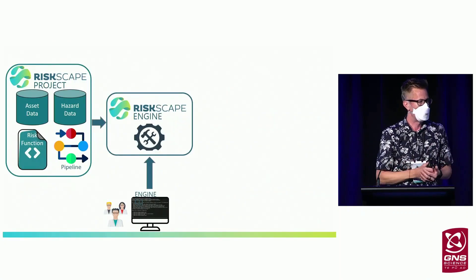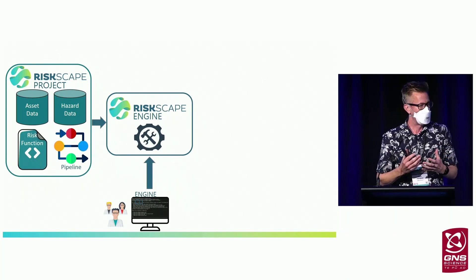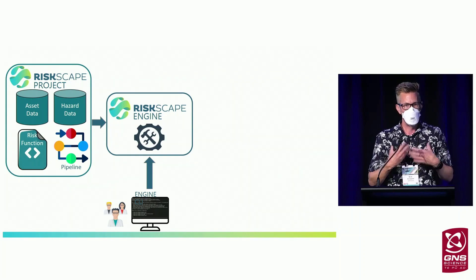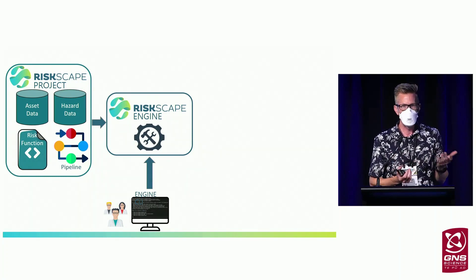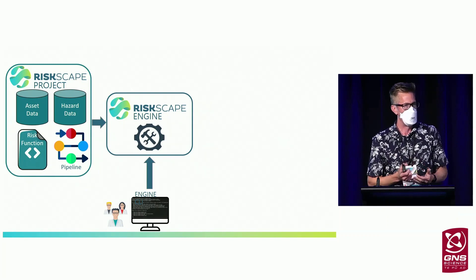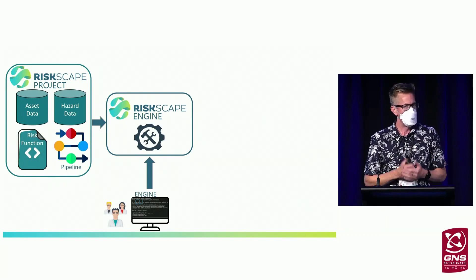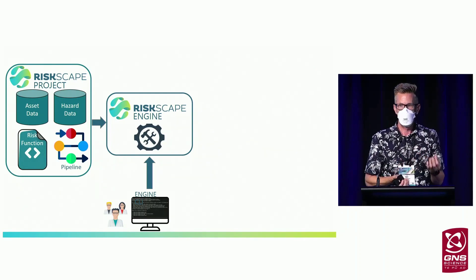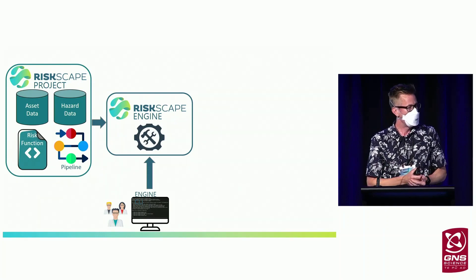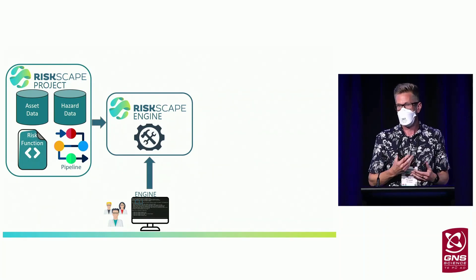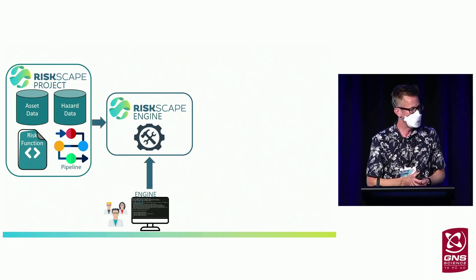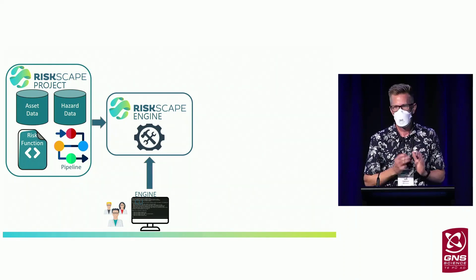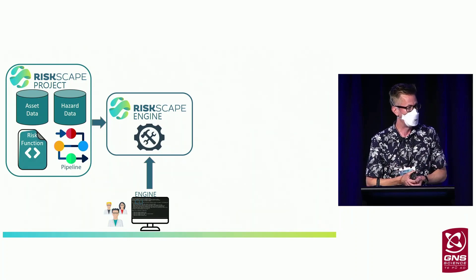The key component of the RiskScape tool is the engine — you can think of this as the calculator. To run the engine, you need a RiskScape project containing hazard data, which could be flood maps, earthquake shaking maps, or wind fields from a tropical cyclone. You also need asset data — building locations or a water network — combined with a RISC function, which says: given those assets and that hazard, what's the consequence? Researchers can use the pipeline through a command line interface, and the RiskScape engine itself is open source and downloadable from the RiskScape website.